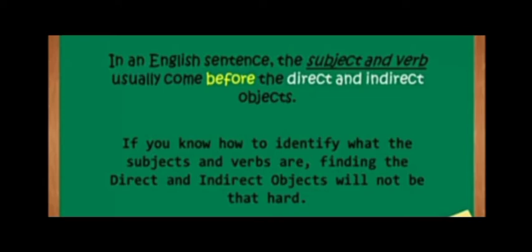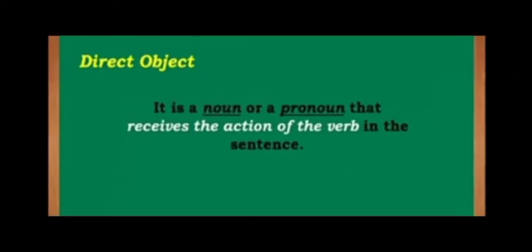In an English sentence, the subject and the verb usually come before the direct and indirect objects. Now, if you know how to identify what the subject and verbs are, finding the direct and indirect objects will not be difficult. All of you know what is a subject and what is a verb, right? Now, what is a direct object? It is a noun or a pronoun that receives the action of the verb in the sentence.